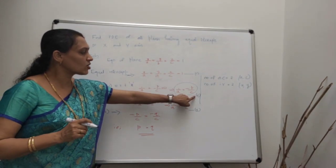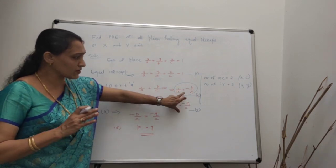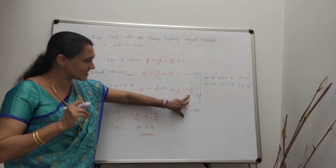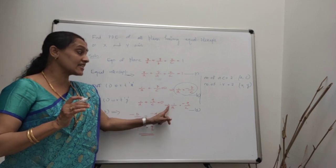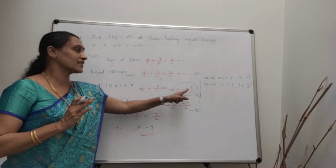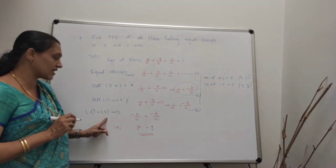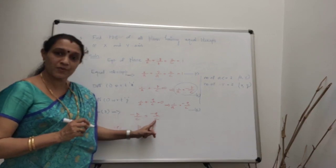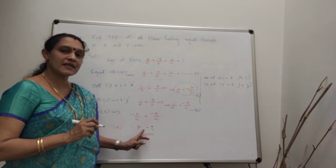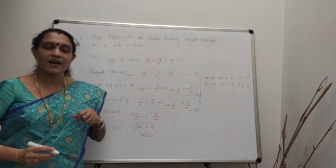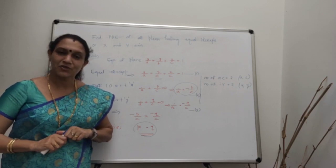From equations 2 and 3, since both equal 1/a, we equate the right-hand sides: -p/c = -q/c. The negative signs cancel and c cancels, giving p = q. This is the required partial differential equation. Thank you very much.